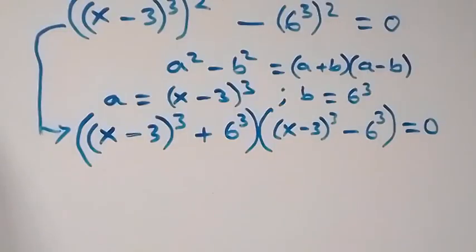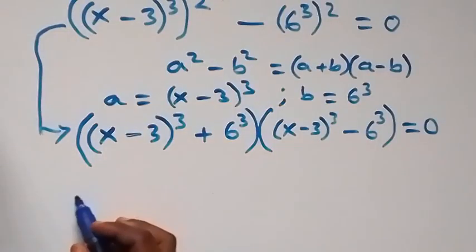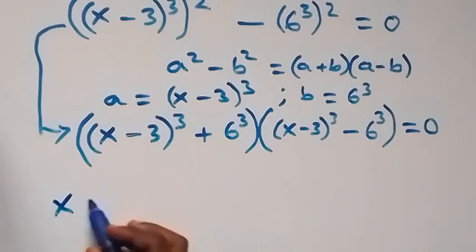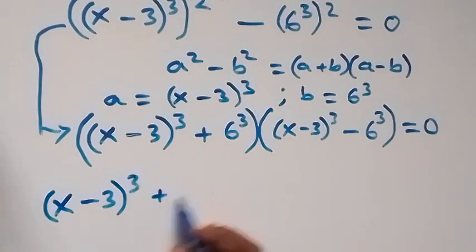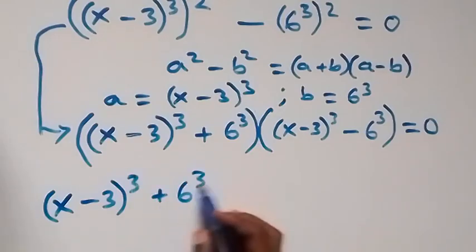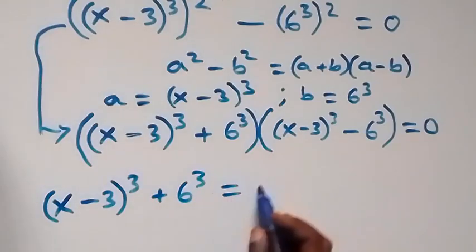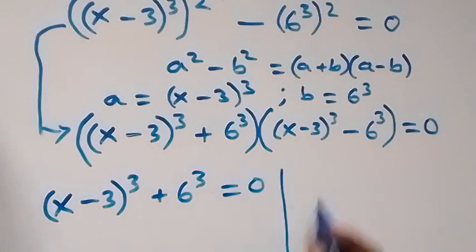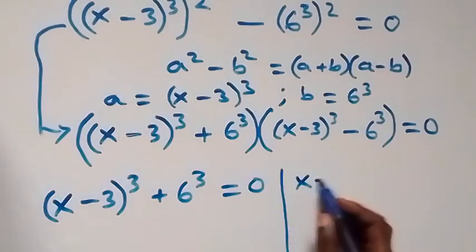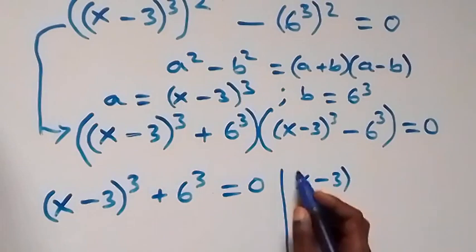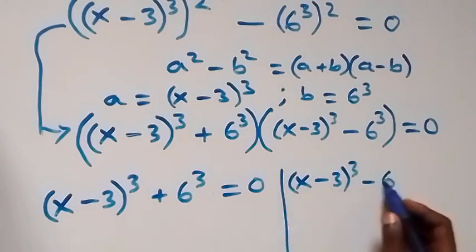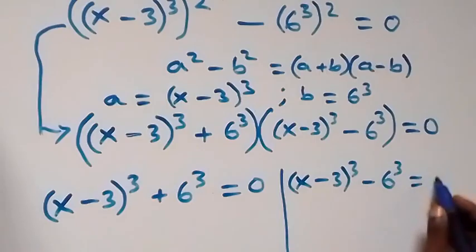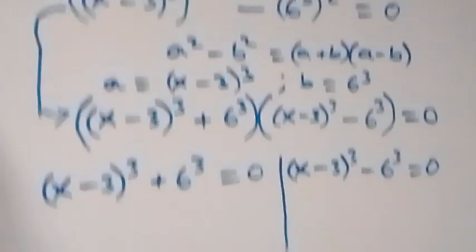We have two cases. The first: (x − 3)³ + 6³ = 0. And the second: (x − 3)³ − 6³ = 0.